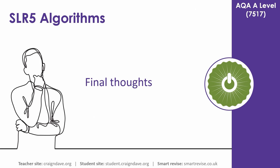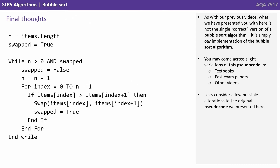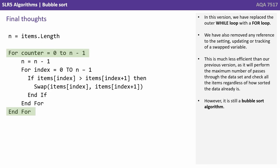Let's consider a couple of final thoughts on the bubble sort algorithm. What we've presented here is not the single correct version of a bubble sort — no such thing exists — it's simply our implementation. You will see slightly different variations of this in textbooks, past papers, and other videos. In this variation, we've replaced the outer while loop with a for loop and removed any reference to the swapped variable. This is much less efficient than our previous version, as it will perform the maximum number of passes through the data set regardless of how sorted the data already is. However, it's still a bubble sort algorithm.